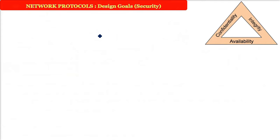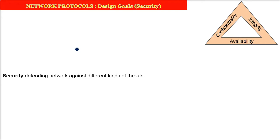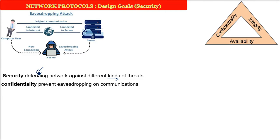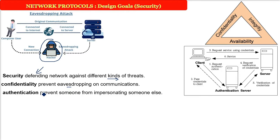Security is a major issue in networks with thousands of machines. There are people who pose threats of different kinds. Eavesdropping is one concern - confidentiality deals with preventing a third party from listening to a private conversation. Authentication is also required: you must prove who you are and prevent someone from impersonating someone else.